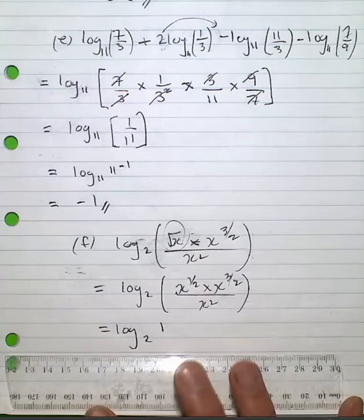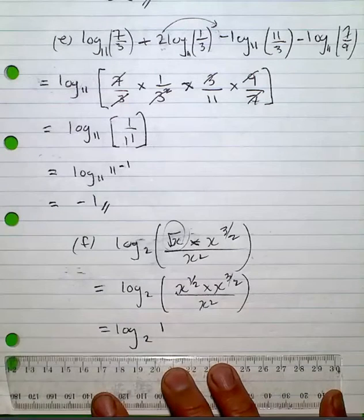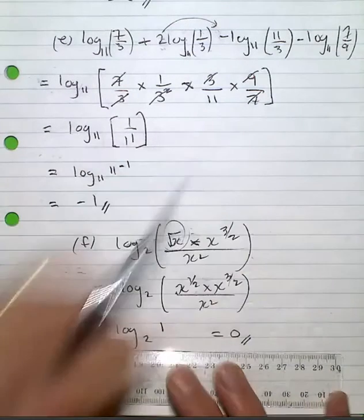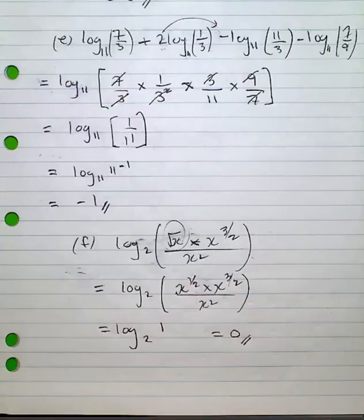Now, any log of 1 to any base is by definition 0 as my final answer. So quite a mucky one that cleans up pretty quickly.